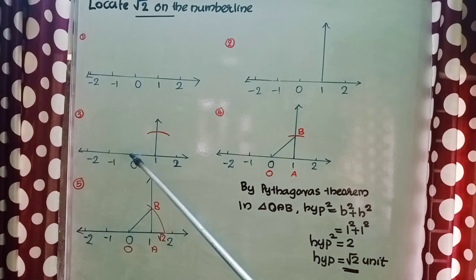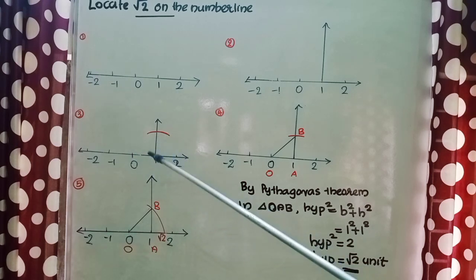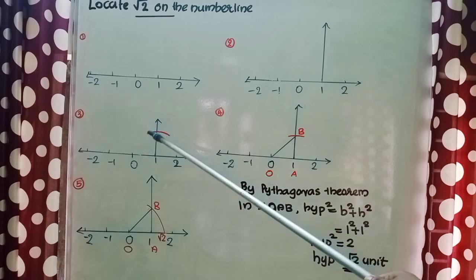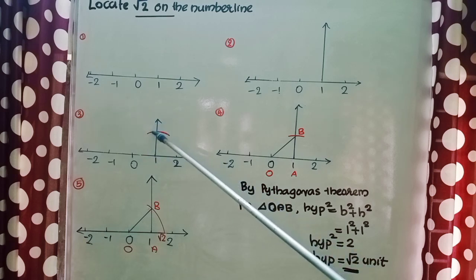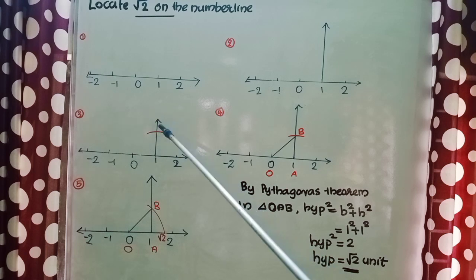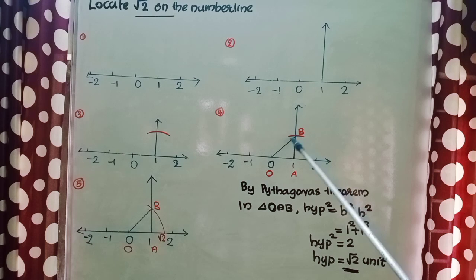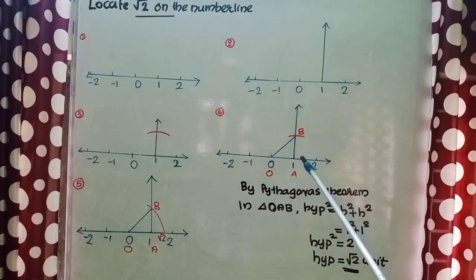Keep the compass on the point 0 and take the distance 0 to 1. After that, keep the compass on the point 1 and mark the point and draw the arc. Now, let us join that new point and our number 0. Now, here we can see a triangle is formed.